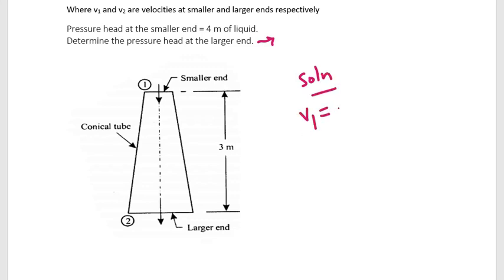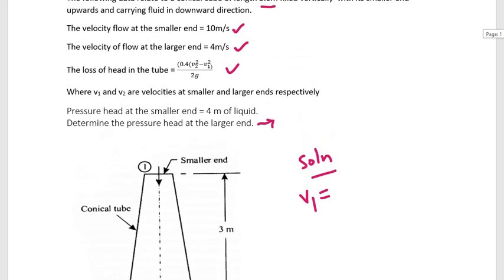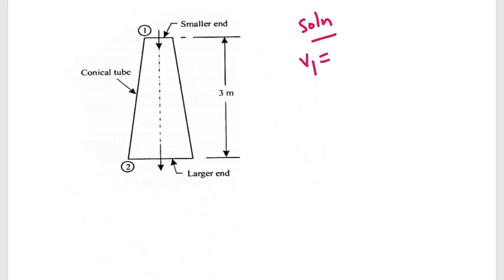v1 is equal to 10 meters per second, v2 is equal to 4 meters per second, and z1 is equal to 3 meters.